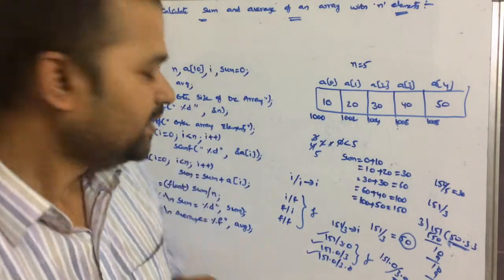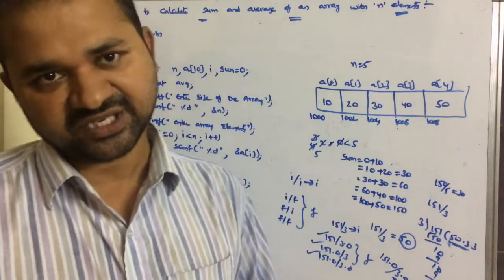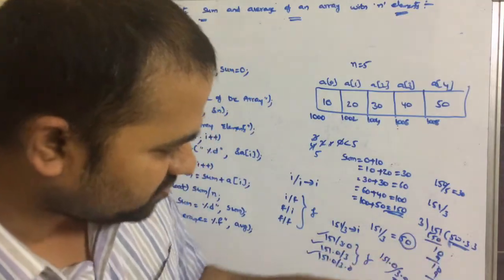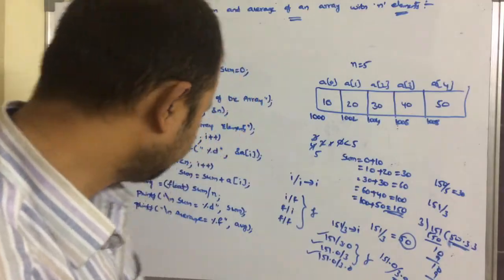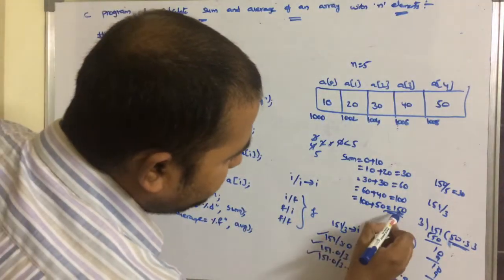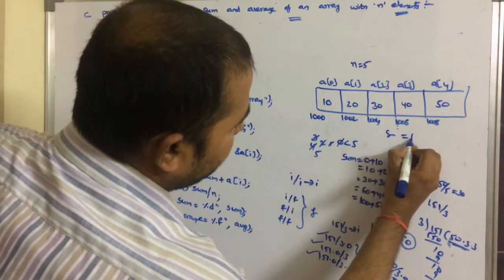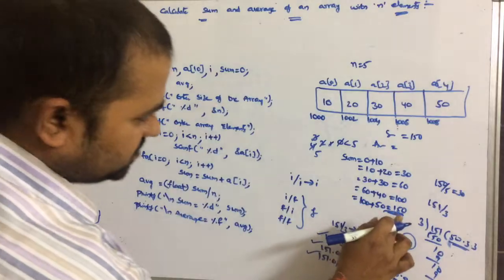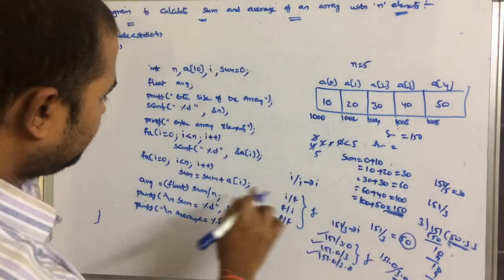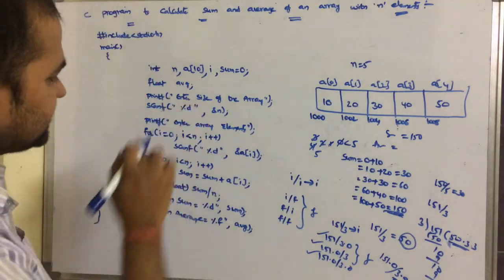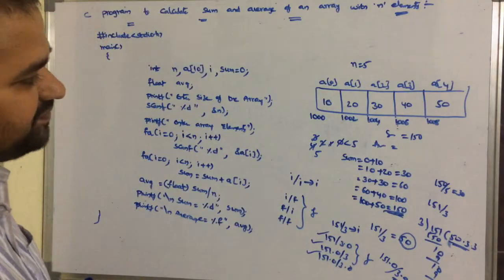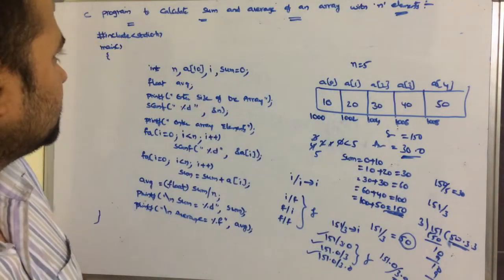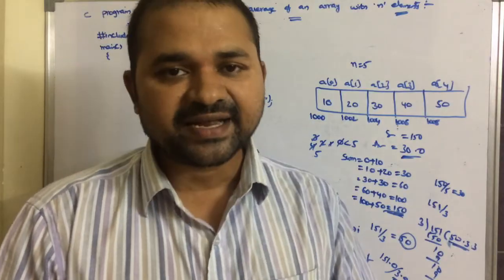In this example, if the result is a whole number typecasting may not be strictly necessary, but for odd values like 151 we do need it. Finally, printf prints sum = 150 using %d, and printf prints average = 30.0 using %f — since after typecasting 150 / 5 gives 30.0. In this way we can calculate sum and average for an array with n elements.